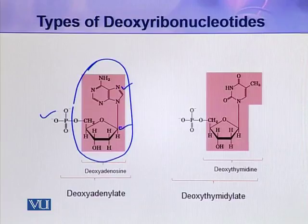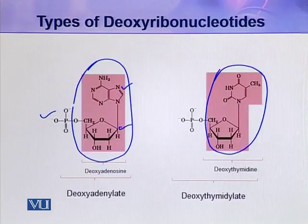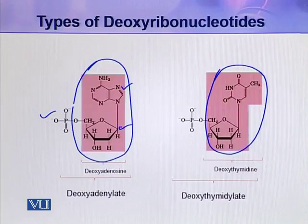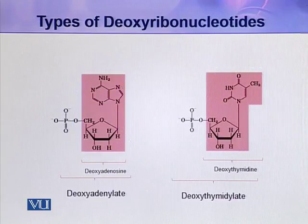In the next picture, this colored portion is again a nucleoside. The nitrogenous base in this nucleoside is thymine, so this nucleoside is called deoxythymidine. If phosphoric acid is also included in this molecule, it becomes a nucleotide, and this nucleotide is called deoxythymidylate. So these are two types of deoxyribonucleotides.